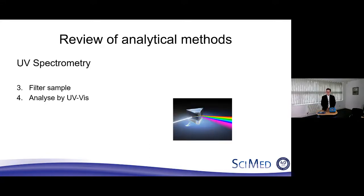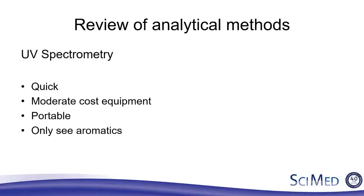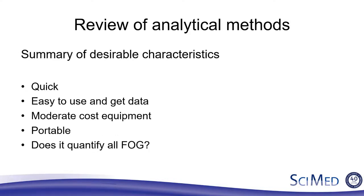UV always gets thrown into these comparisons — we expect miracles of UV sometimes. The first two phases are the same, then we filter the sample, stick it in the UV, press a button, and it gives us a number. It's a nice, simple, easy-to-use technique that's quick, the equipment isn't massively expensive, and it's portable. But we're not going to see everything — we're only going to see things that have a chromophore, so typically only aromatic species. From this review of all the different analytical techniques, we can build a wish list: the equipment needs to be quick, easy to use, not too expensive to purchase, handy if portable, and able to see and quantify everything we want.